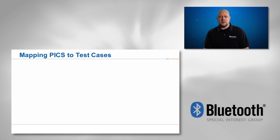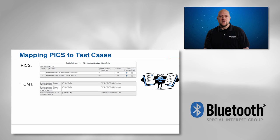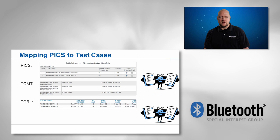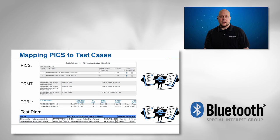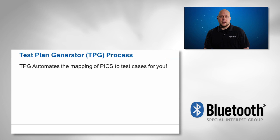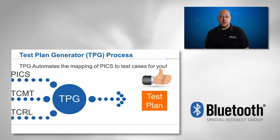The mapping of ICS to test cases is a process involving a lot of manual work. For instance, in order to find the tests required for the Discover Alert Status service, you first need to analyze the test case mapping table and then the test case reference list. The manual work involved in creating your test plan has been automated in the TPG. Using the TPG not only saves time but also adds consistency to the test plans used by you and every other member.